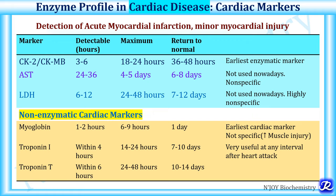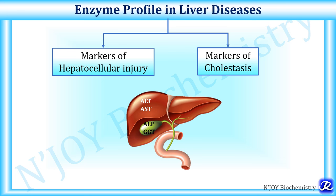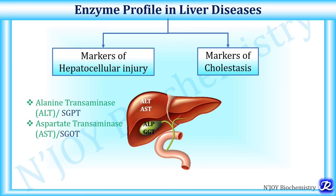Now, coming to the liver enzyme panel: enzymes indicative of liver damage are of two types — markers of hepatocellular injury and markers of cholestasis. Markers of hepatocellular injury are alanine transaminase (ALT), previously called SGPT, and aspartate transaminase (AST), previously called SGOT. Whenever there is damage to the hepatocytes, these enzyme levels will be increased.